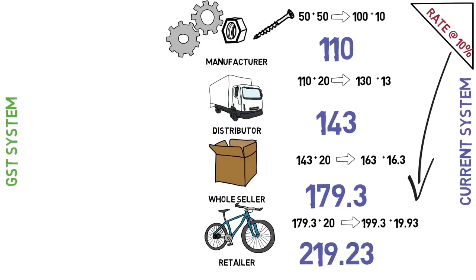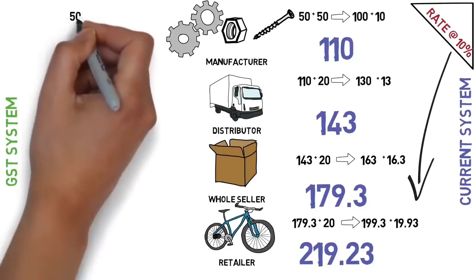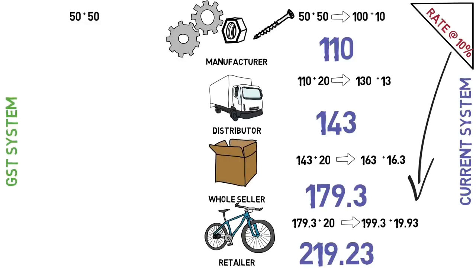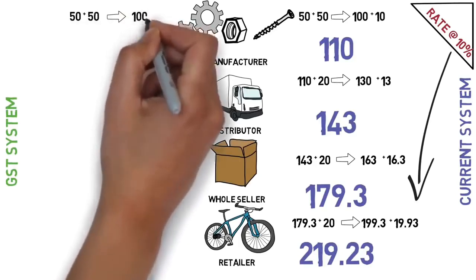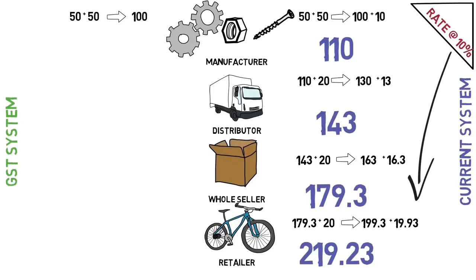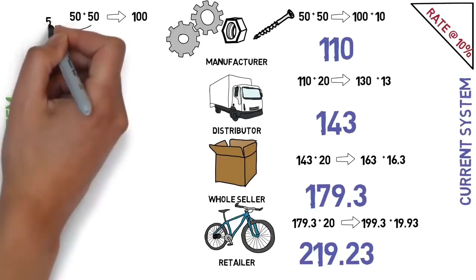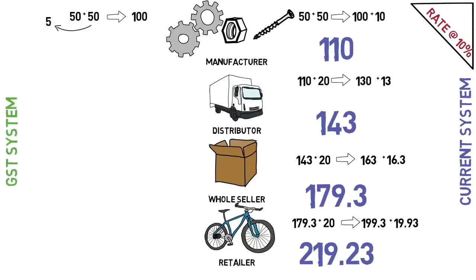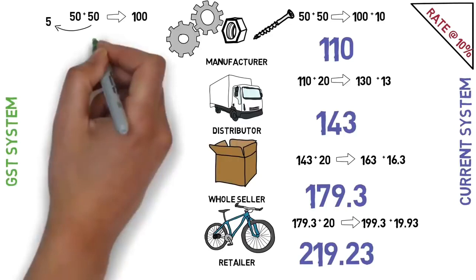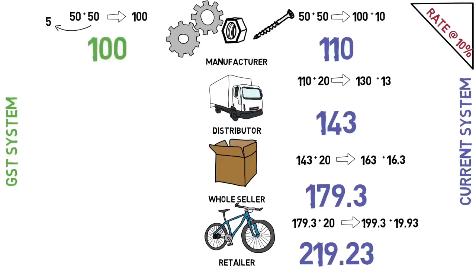So the final consumer price is Rs.219.23. This is how the current taxation system works in India. Now we will take the same example in the GST system. Raw material of Rs.50 and manufacturing value of Rs.50 make the product of Rs.100. But this time the manufacturer has to pay taxes only on the value added by him, which is Rs.50. So he pays 10% of Rs.50, which is Rs.5 as tax.